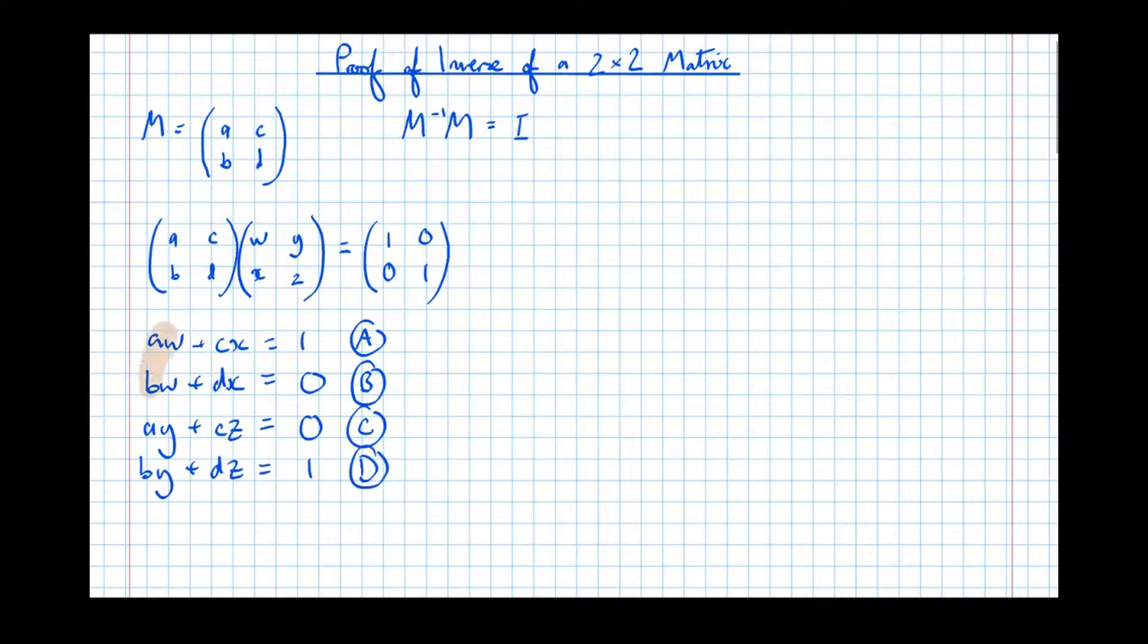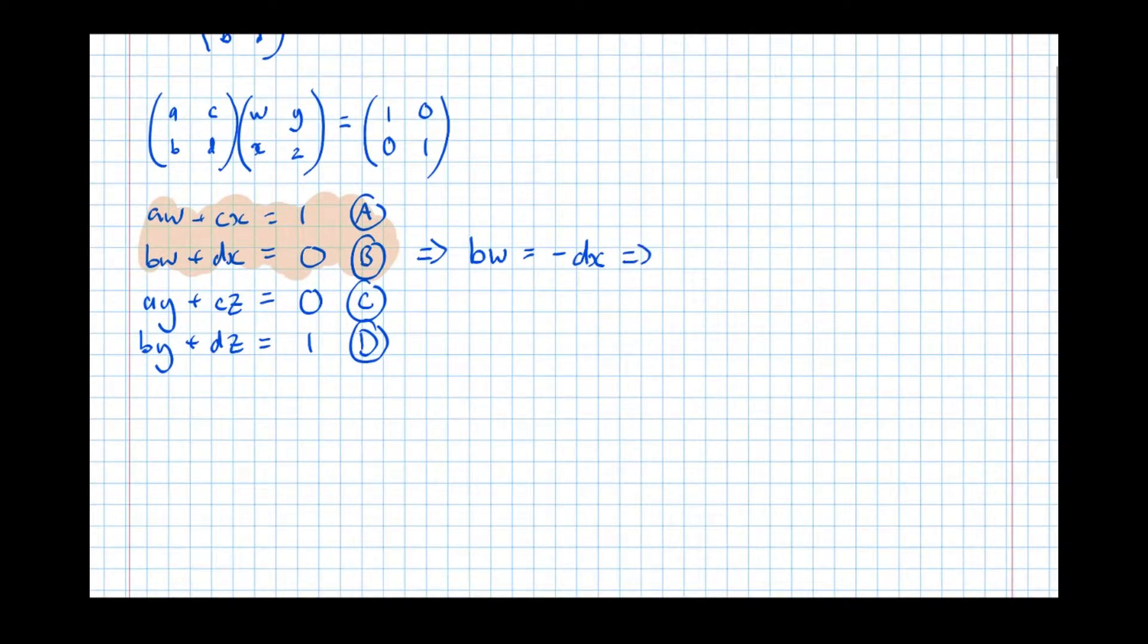Now let's concentrate on the first pair of equations here. Just want to concentrate on those. And in particular, it's going to be much easier if we concentrate on equation B first, because B has fewer terms. So we can say that B implies BW equals minus DX. And from that, we can get an expression for W, which means that W equals minus DX over B.